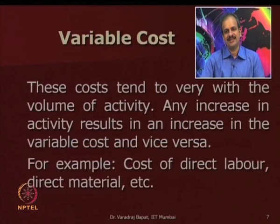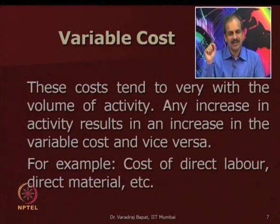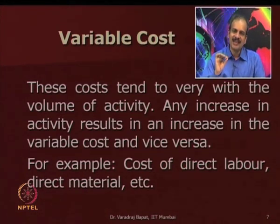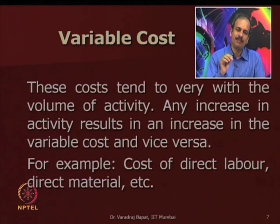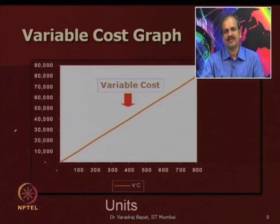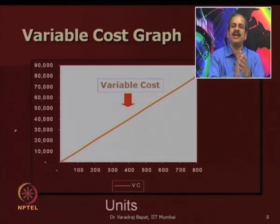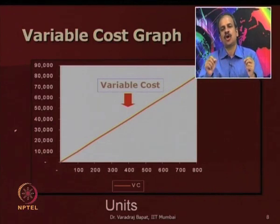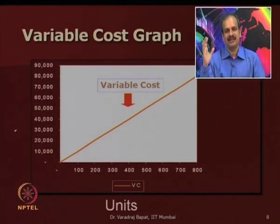Variable cost: every increase in the level of activity results in the same increase in cost. When output decreases, variable cost decreases in the same proportion. In a production setup, cost of direct labor and direct material are typically variable costs — just as petrol is variable for a vehicle. The graph of variable cost starts at zero and increases linearly, meaning every extra unit incurs some extra cost.